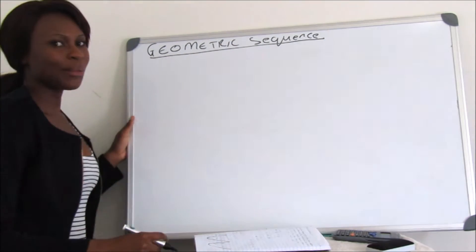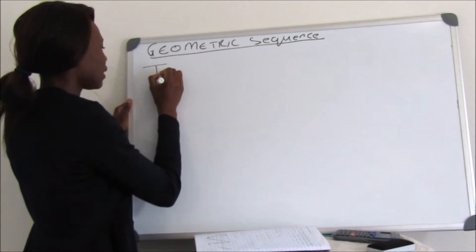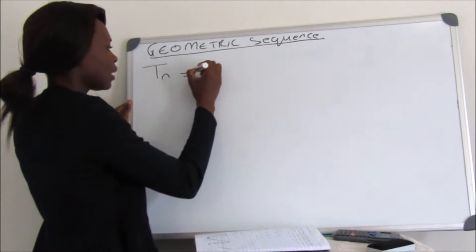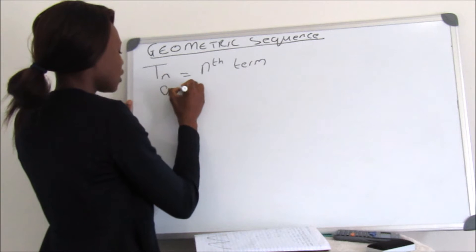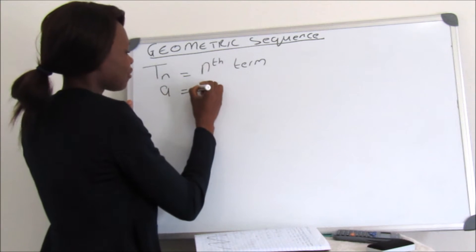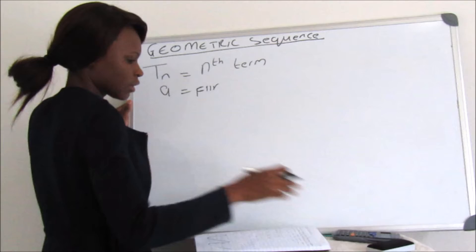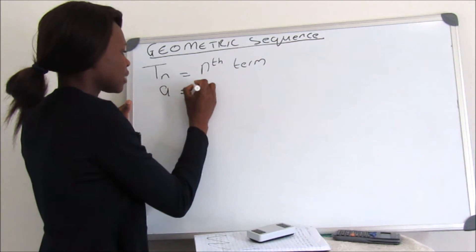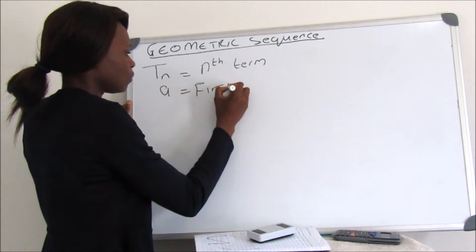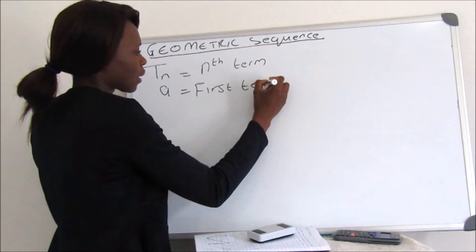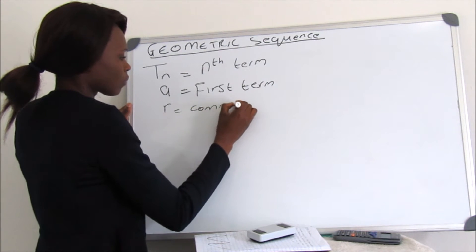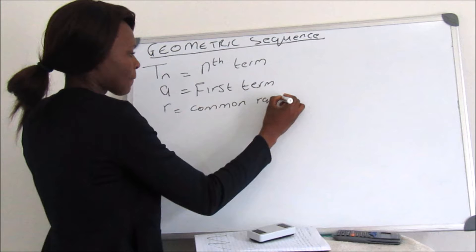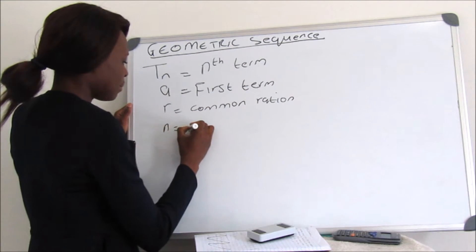With Geometric Sequence there are a few things that you will always see in all of the questions. Things like TN, which means the nth term; A, which is our first term; R, which is our common ratio; and n, which is the number of terms.